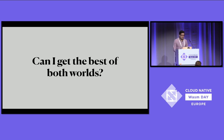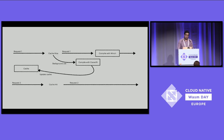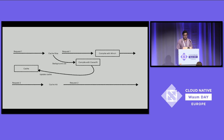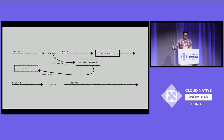Someone could ask: can I get the best of both worlds? I'll speak from our experience at Shopify — we think it's possible with a model like this. Let's say you have a functions-as-a-service application where you're caching pre-compiled modules in a key-value store and you get a cache miss. You can compile with Winch to get fast startup times, and at the same time create a background job that compiles with CraneLift, so that your next request on a cache hit gives you both good startup and good runtime performance.